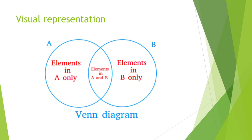Looking at a visual representation of a Venn diagram — a very basic example — we have set A and set B. You will have elements that are only in A, elements that are only in B, and elements that are in both A and B. The section in the middle is called the intersection — that's all the elements that are both in A and B.